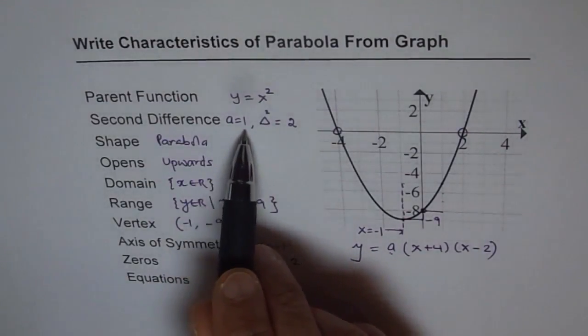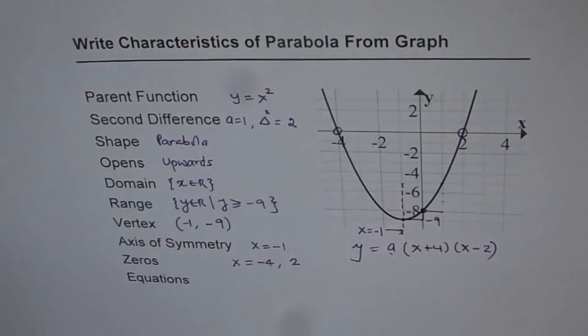So if you plug in 0 here and minus 9 for y, you will get the value of a. We had assumed earlier that the value of a is 1. So this is a good time to check it. We could have straight away written 1 here.